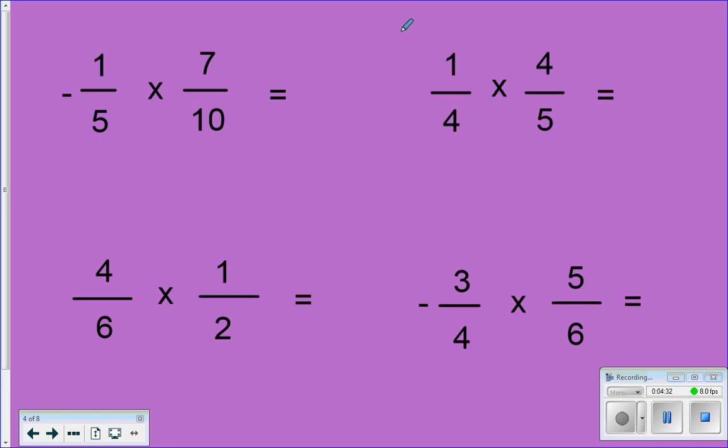What are the rules for multiplying with positives and negatives, Caden? You might have some of that today. Because look at this one. I have negative 1/5 times 7/10. What's my answer going to be, positive or negative? Negative. And then you can go ahead and do your multiplication across. Can you reduce before you multiply? Do you guys remember how to do that, Caden?